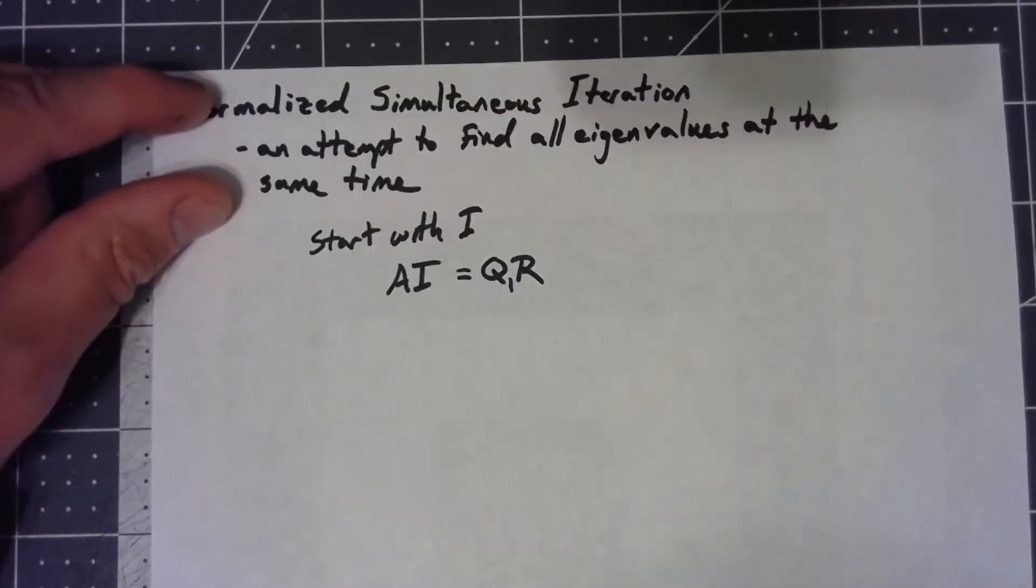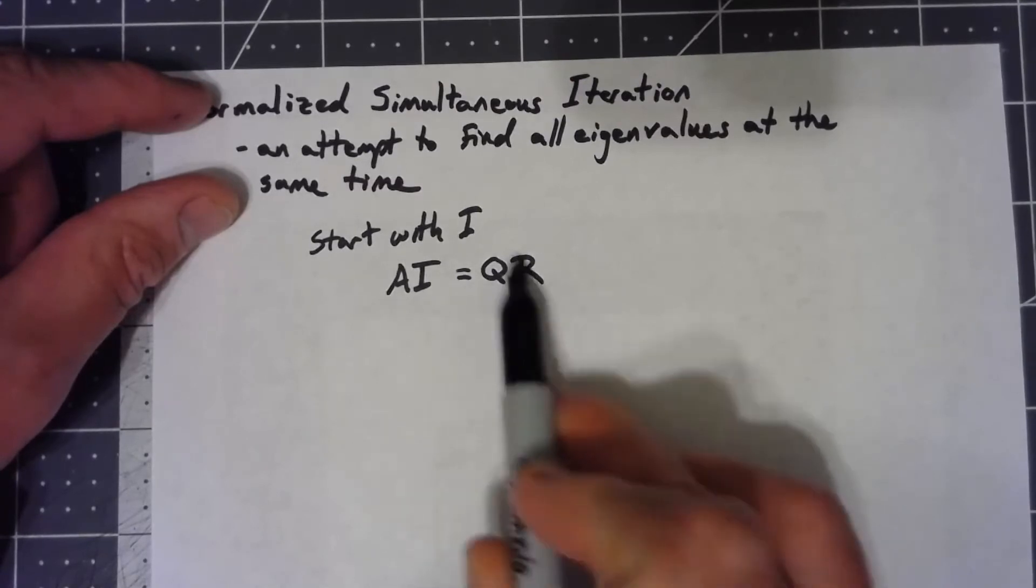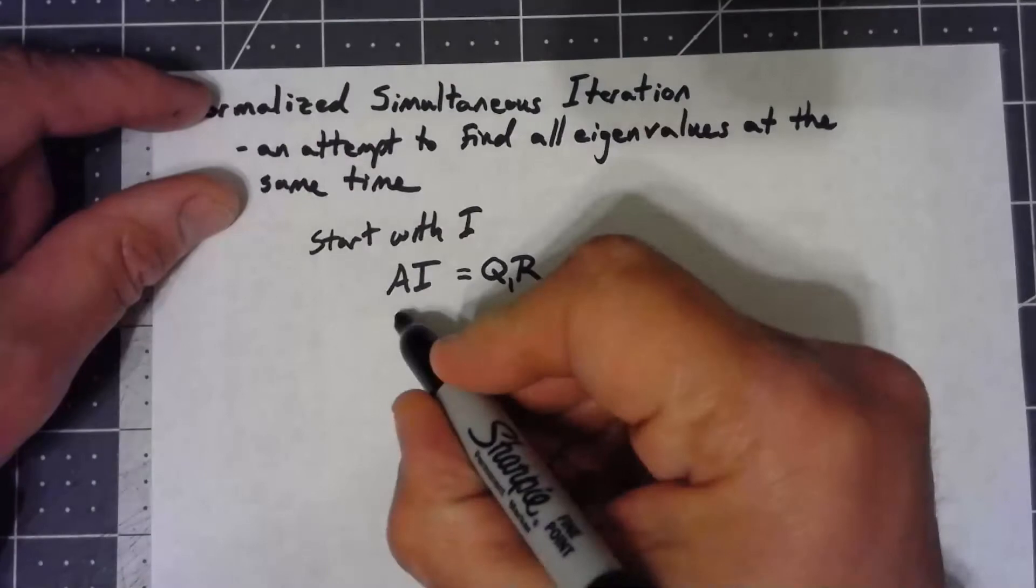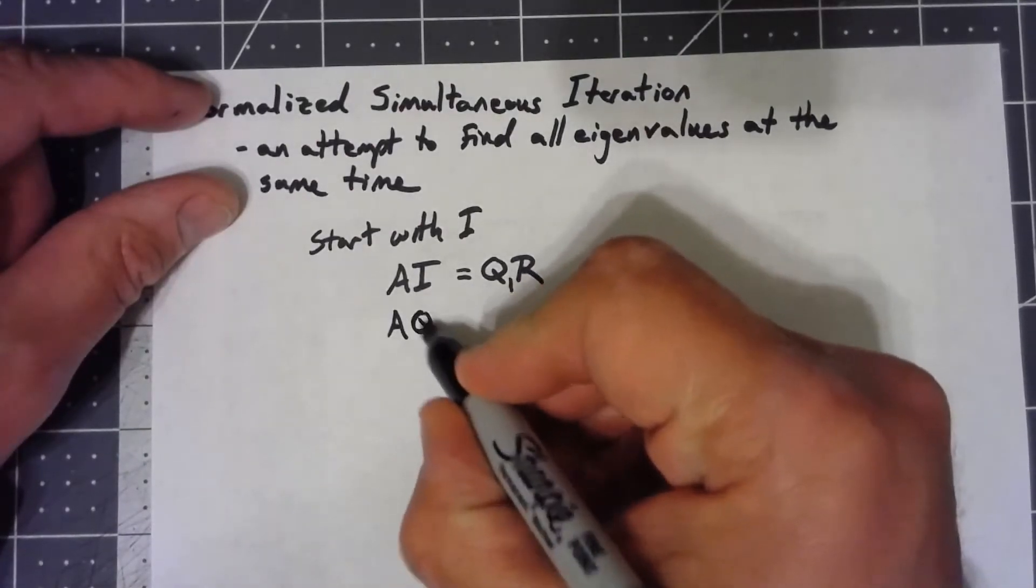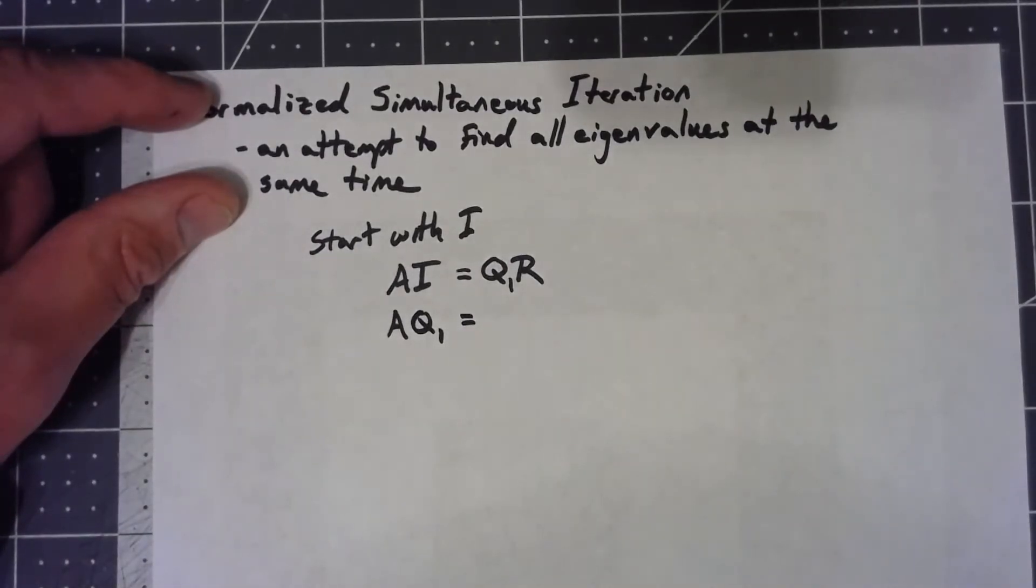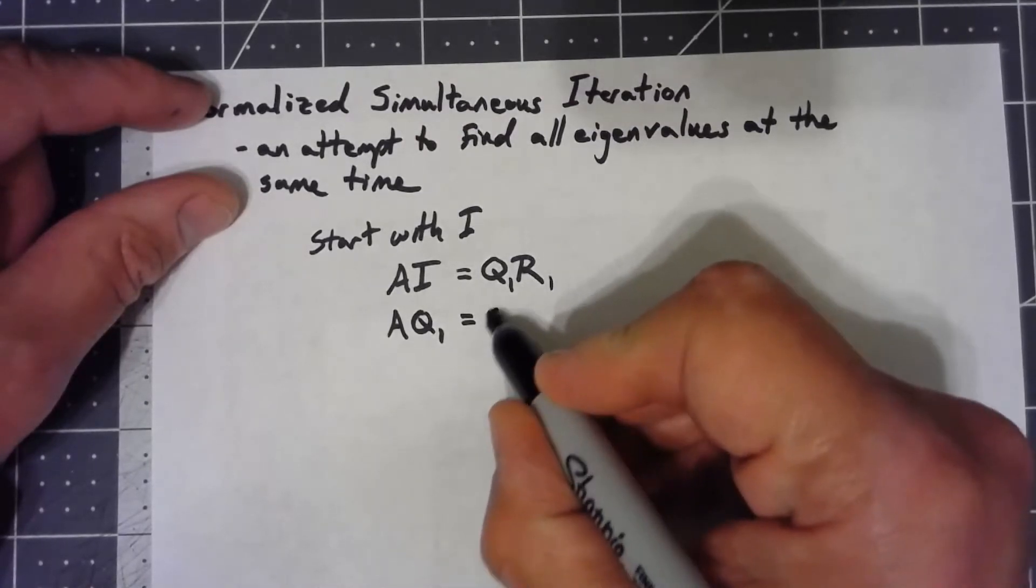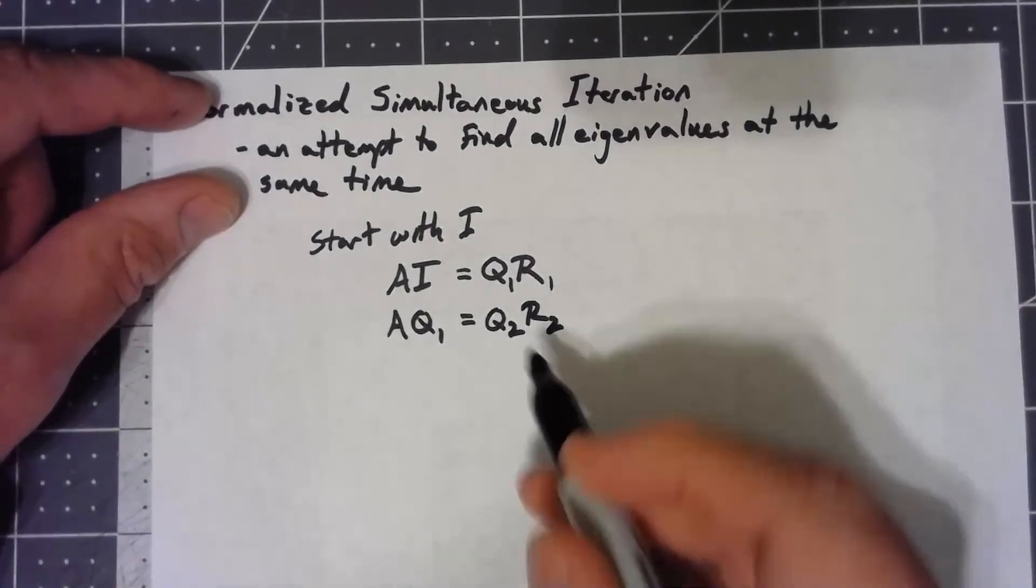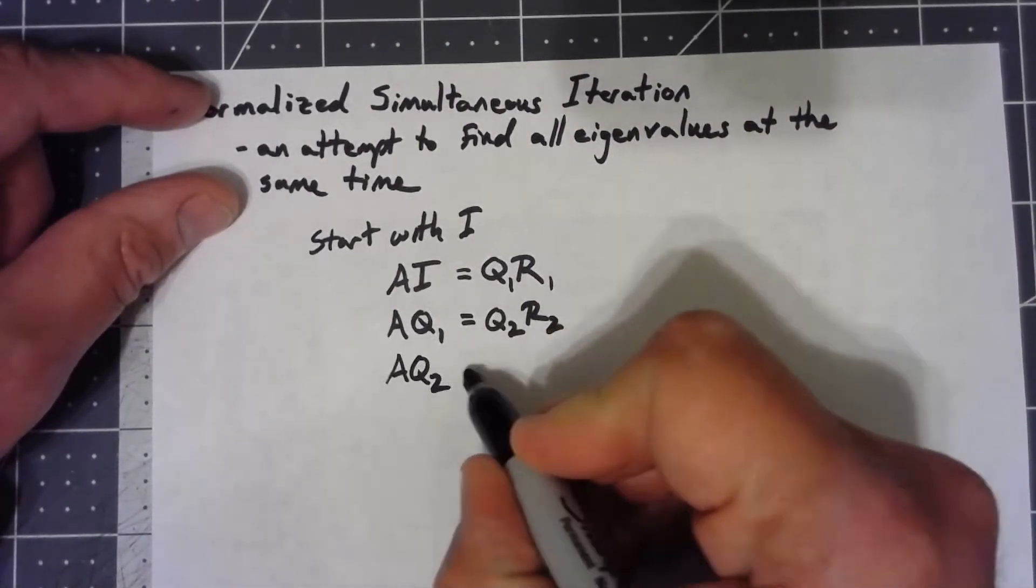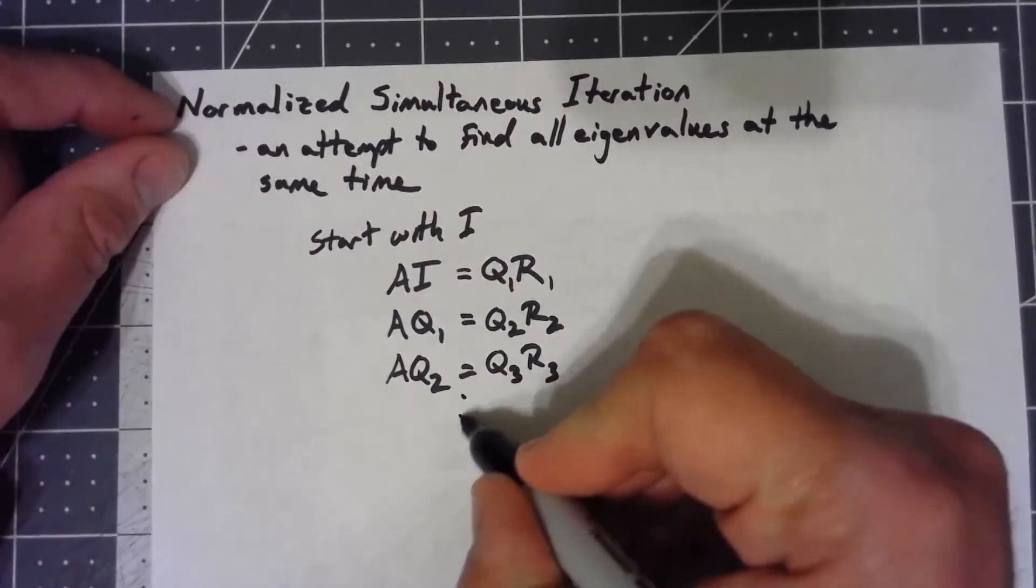So how do we actually do this? Because this Q should be our next best guess as to what the eigenvectors are, I'm going to keep doing this. So the next step is to take A times Q1. That's going to shift it away from orthonormal, so we do a QR factorization. This is my next best thing. So we'll say that A times Q2 is some Q3 times R3. And we just keep going like that.